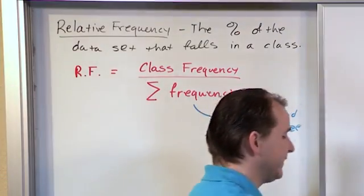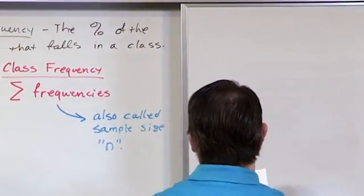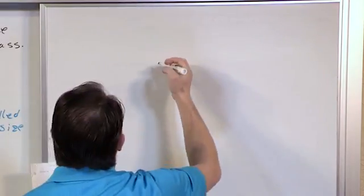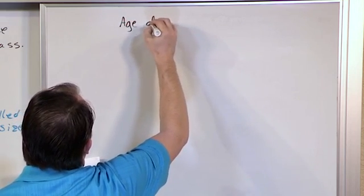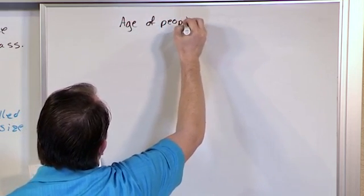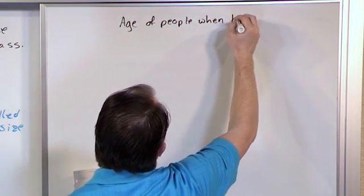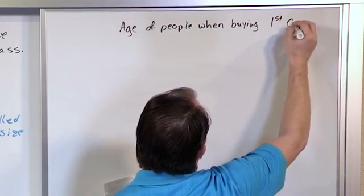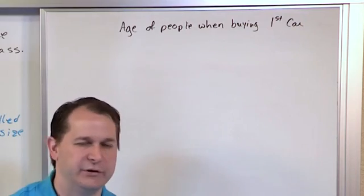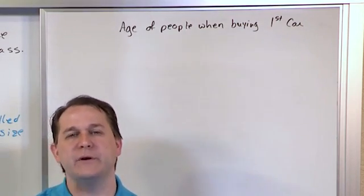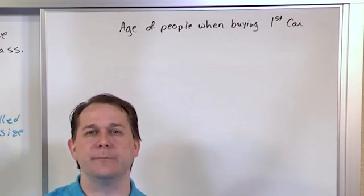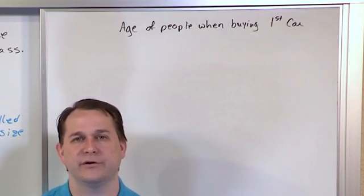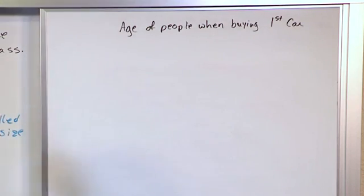This looks complicated but it's very simple. Let's look at the frequency distribution of the age of people when buying a first car. I use ages a lot in these examples because they're easy for you to visualize and understand.